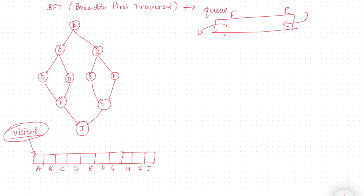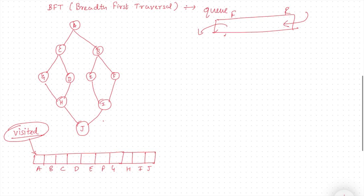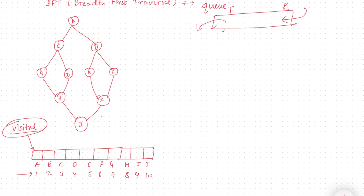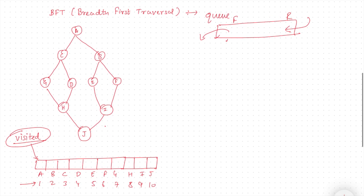The visited array has a count equal to the number of nodes in the graph: A, B, C, D, E, F, G, H, I, J — so 10 nodes. To represent that everything is not visited, I will give each entry a value of zero. Whenever I visit a node, I will change the value from zero to one.